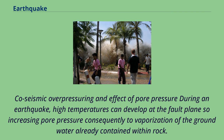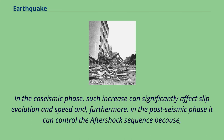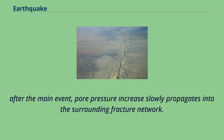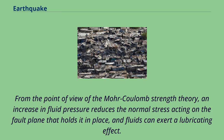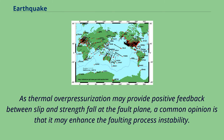During an earthquake, high temperatures can develop at the fault plane, increasing pore pressure due to vaporization of groundwater contained within rock. In the co-seismic phase, such increases can significantly affect slip evolution and speed. From the point of view of the Mohr-Coulomb strength theory, an increase in fluid pressure reduces the normal stress acting on the fault plane and fluids can exert a lubricating effect. Thermal overpressurization may provide positive feedback between slip and strength fall at the fault plane, potentially enhancing the faulting process instability.